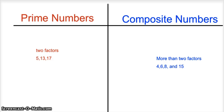Prime numbers and composite numbers. Prime numbers only have two factors. Some prime numbers are 5, 13, and 17.